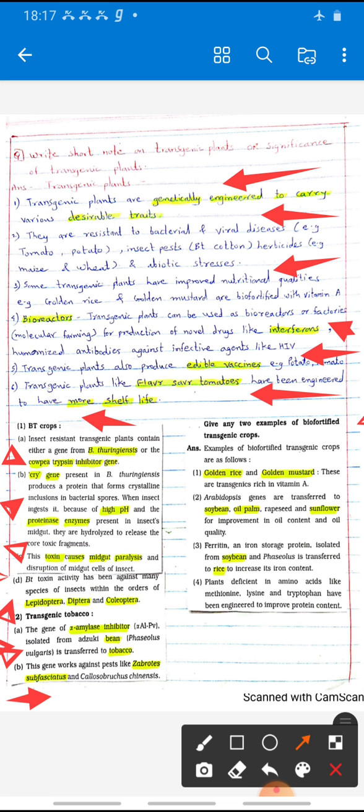Biofortified plants are also produced with the help of transgenic crops, with the help of genetic engineering. There are following examples of this biofortified transgenic crop. The first one is golden rice and golden mustard. These are transgenic crops rich in vitamin A.